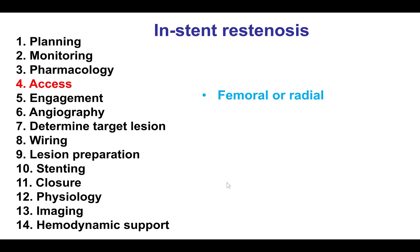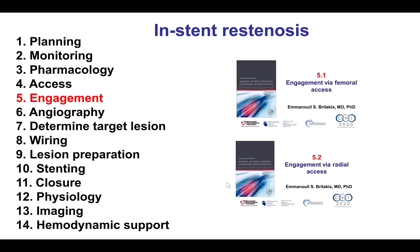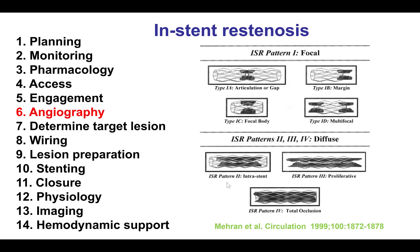Either femoral or radial access can be used for treating in-stent restenotic lesions, and engagement is done in standard fashion. Angiography is important to determine the location and extent of in-stent restenosis. The most commonly used classification is the Mehran classification, which classifies in-stent restenosis patterns as either focal or diffuse. Diffuse can be inside the stent (pattern 2), inside and outside the stent (pattern 3), or a complete occlusion (pattern 4). Complete occlusion is more challenging to treat — essentially a CTO — and the risk of recurrence is also significantly higher.